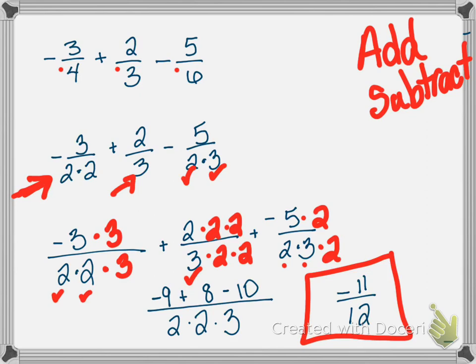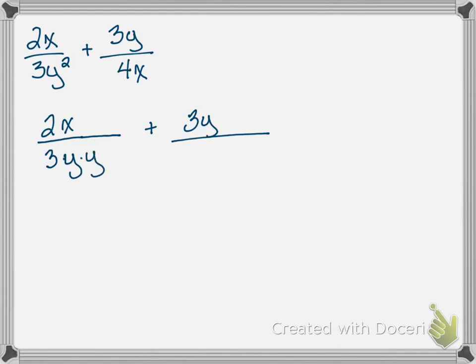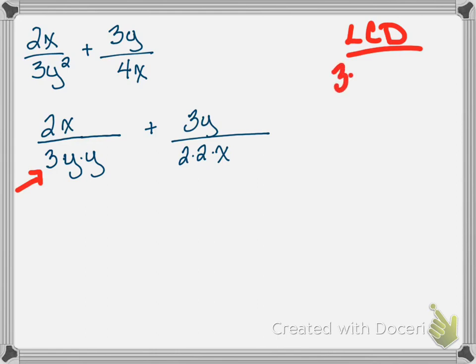Now we use these same LCD principles with variables. We have 2x over 3y squared plus 3y over 4x. I deal only with my denominators. The first denominator is 3 — prime — times y times y. The second denominator is 4x, which breaks down to 2 times 2 times x.